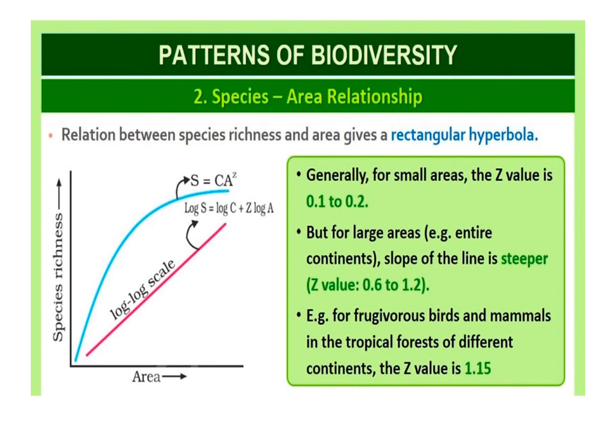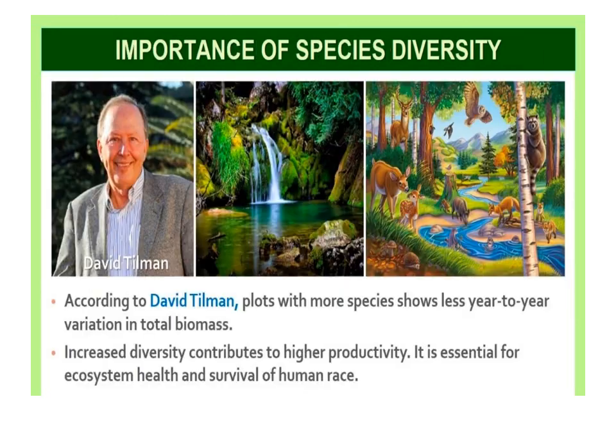The Z value for frugivorous fruit-eating birds and mammals in tropical forests is found to be 1.15. Ecologists believe that communities with more species tend to be more stable than those with fewer species. According to David Tilman, plots with more species show less year-to-year variation in total biomass, as demonstrated through ecological experiments using outdoor plots. Increased diversity contributes to higher productivity and is essential for ecosystem health and the survival of the human race.